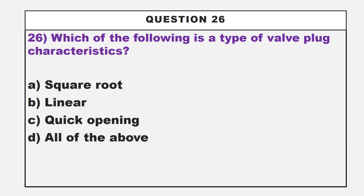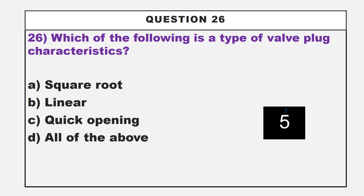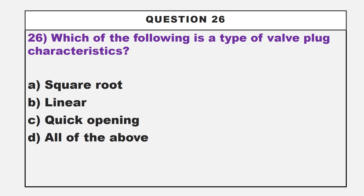We are moving to our last question, related to valve plug characteristics. Which of the following is a type of valve plug characteristics? Option A: square root. Option B: linear. Option C: quick opening. Option D: all of the above. The correct answer is option D, all of the above. Square root, linear, and quick opening are all types of valve plug characteristics.